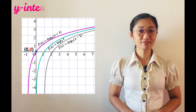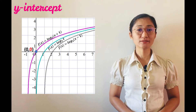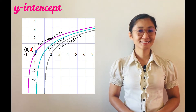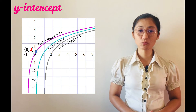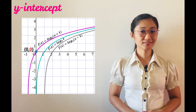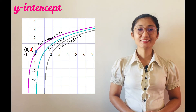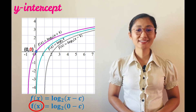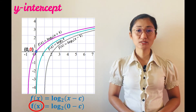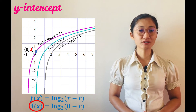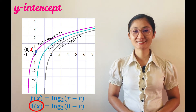On the other hand, if it is a y-intercept, then it is the y-value or ordinate of the point which touches the y-axis. Since the x-coordinate of the point containing the y-intercept is 0, given an equation, the y-intercept is found by substituting 0 to x and solving for the corresponding y or f of x.